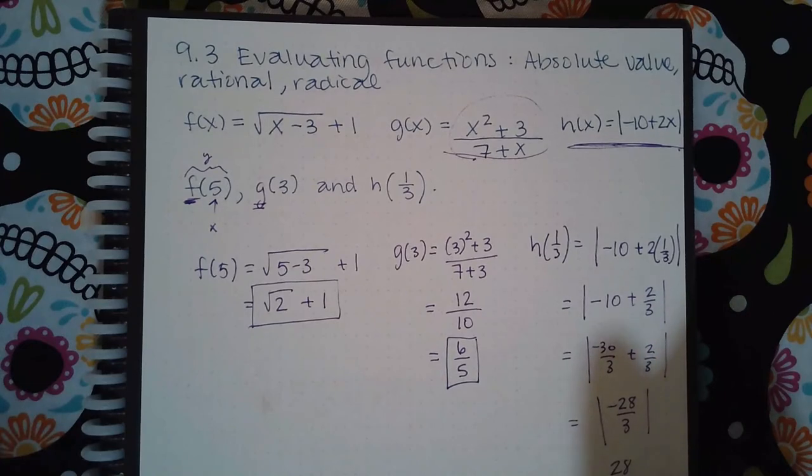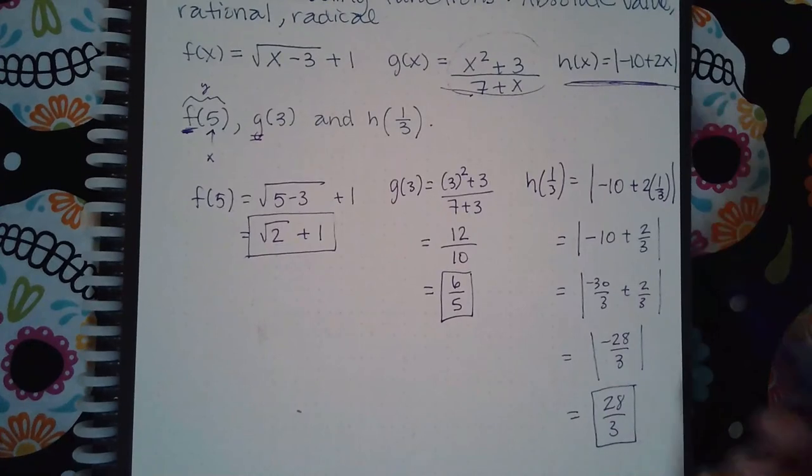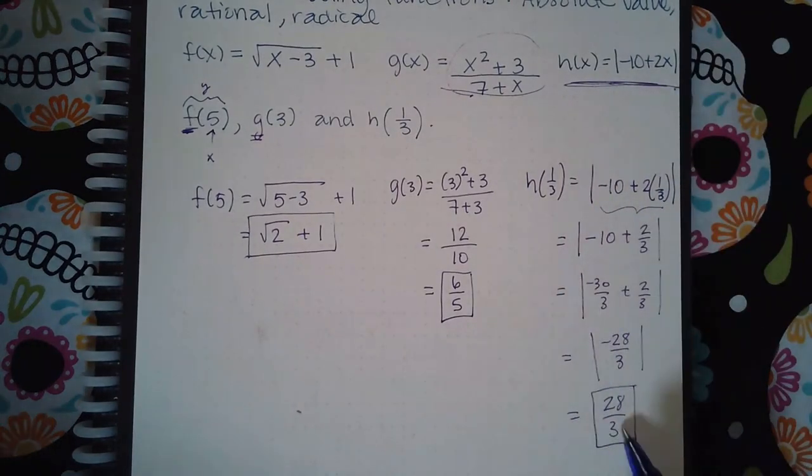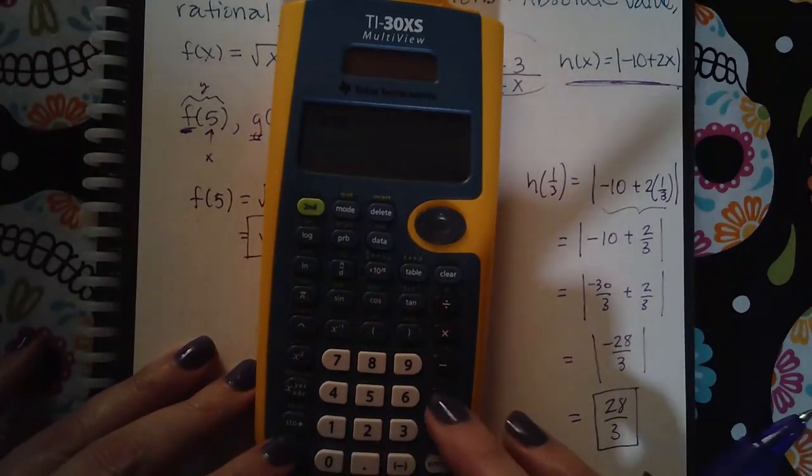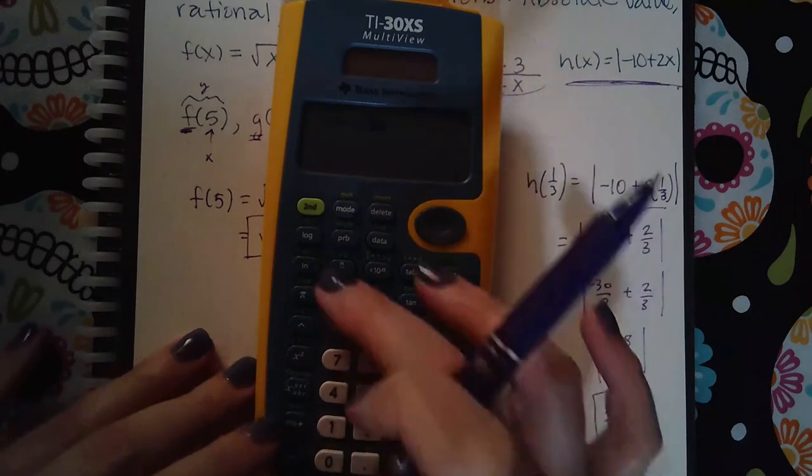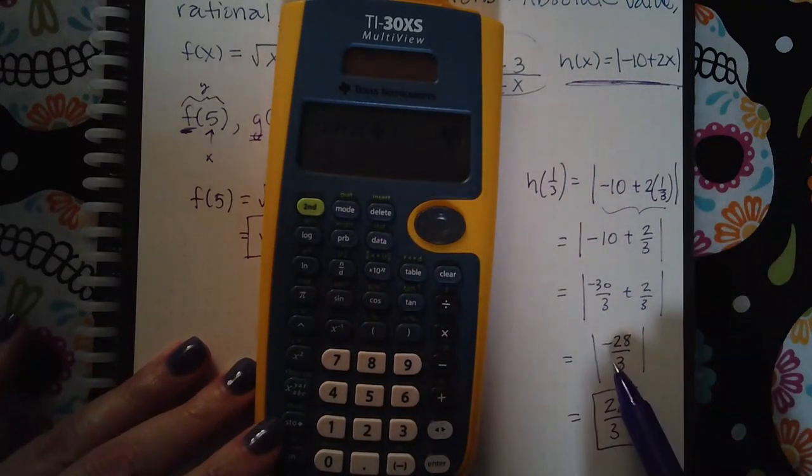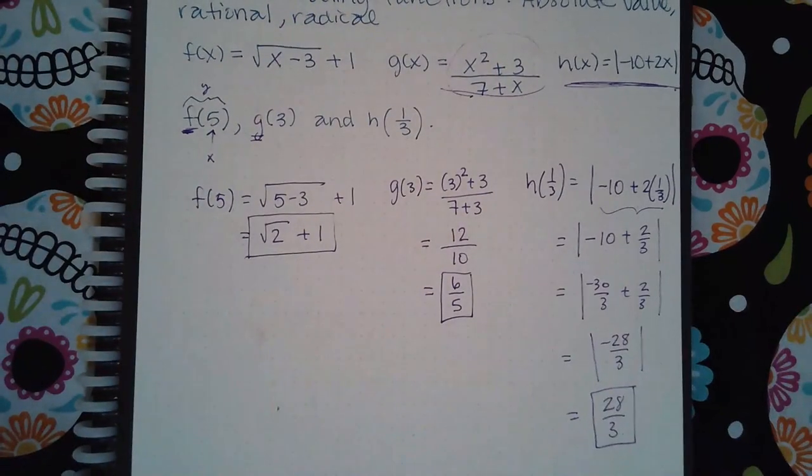You could have typed everything inside here in the calculator and I should end up with 28 over 3 if I did that correct. So negative 10 plus 2 times 1 over 3, we get negative 28 over 3, and then the absolute value of that is positive 28 over 3.